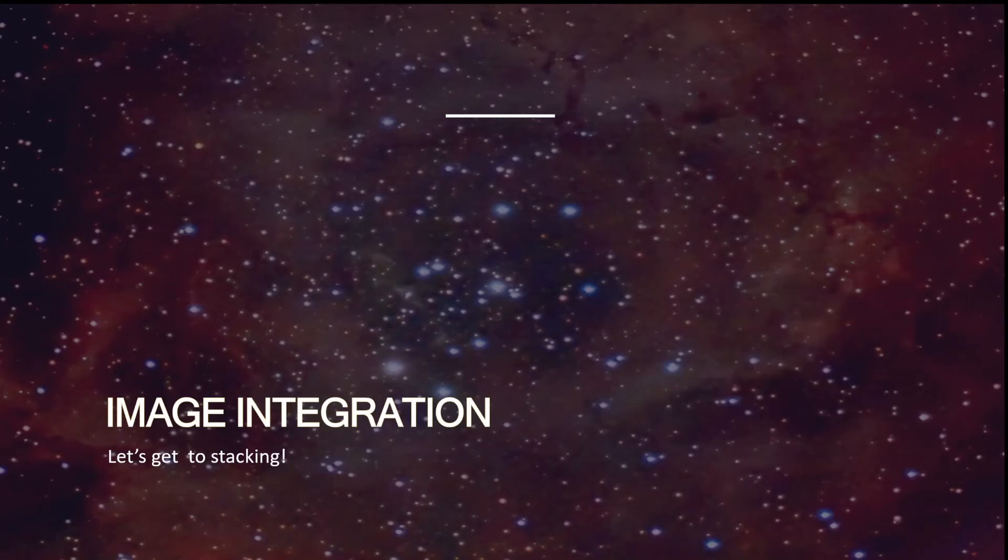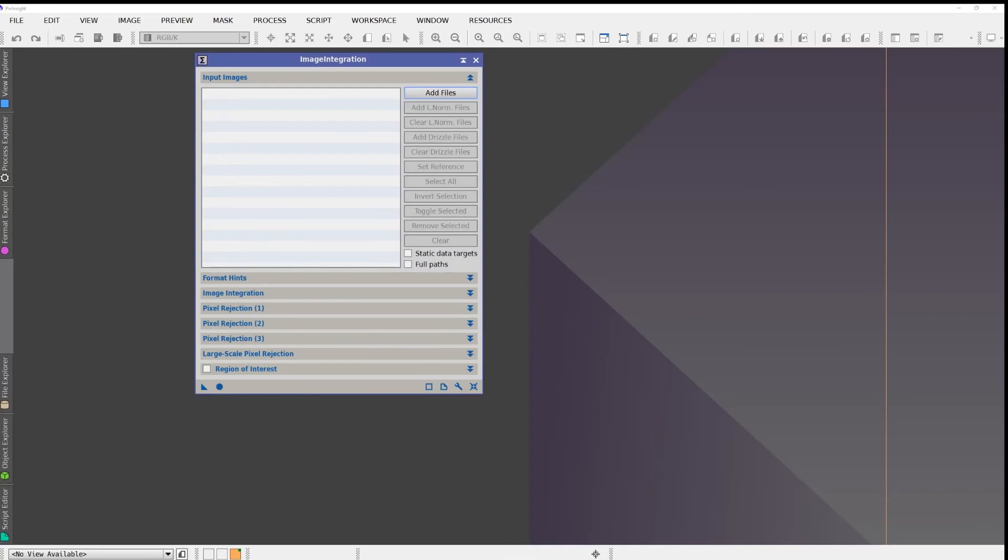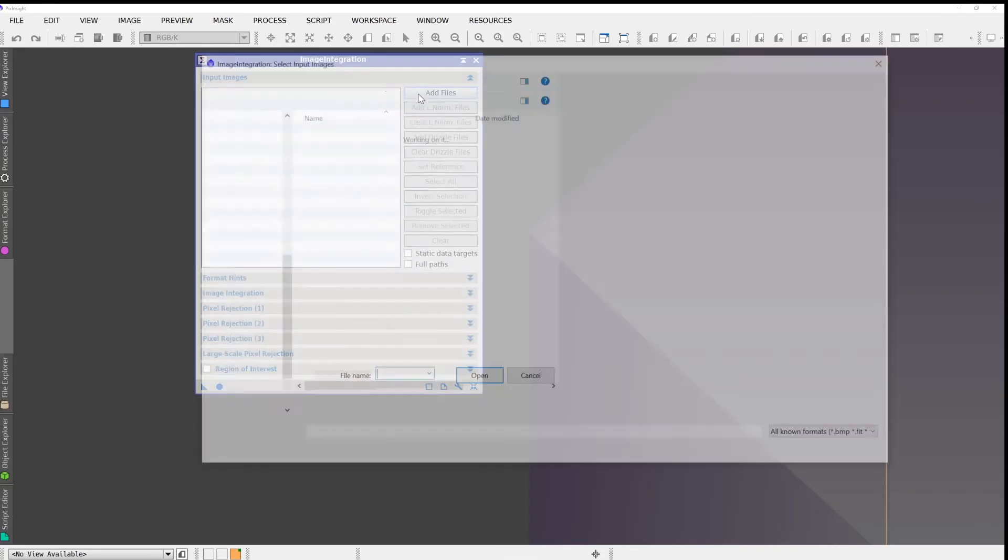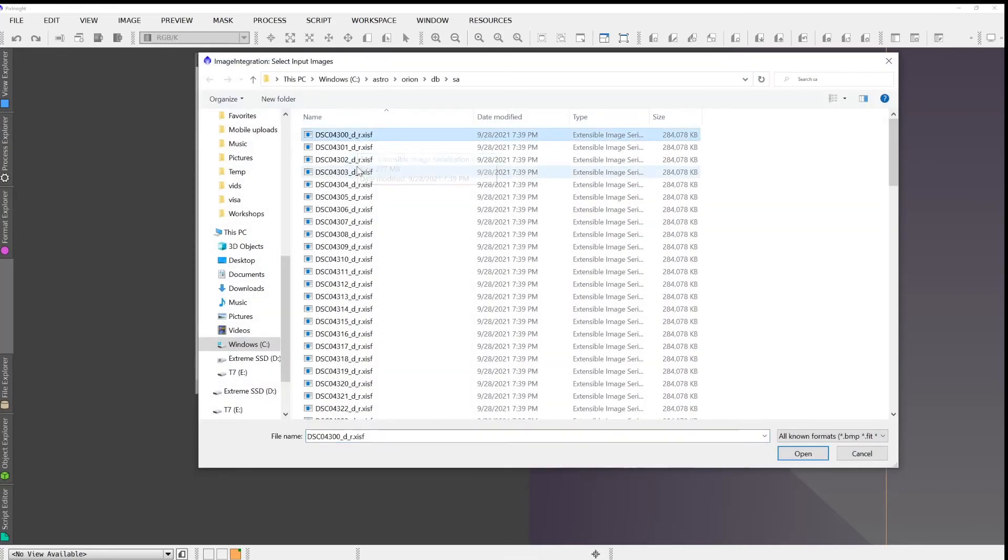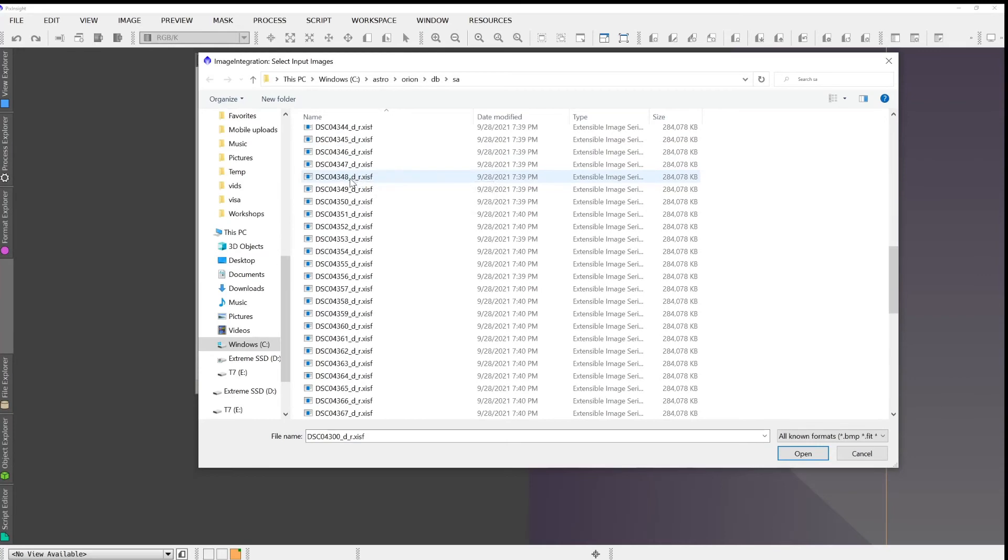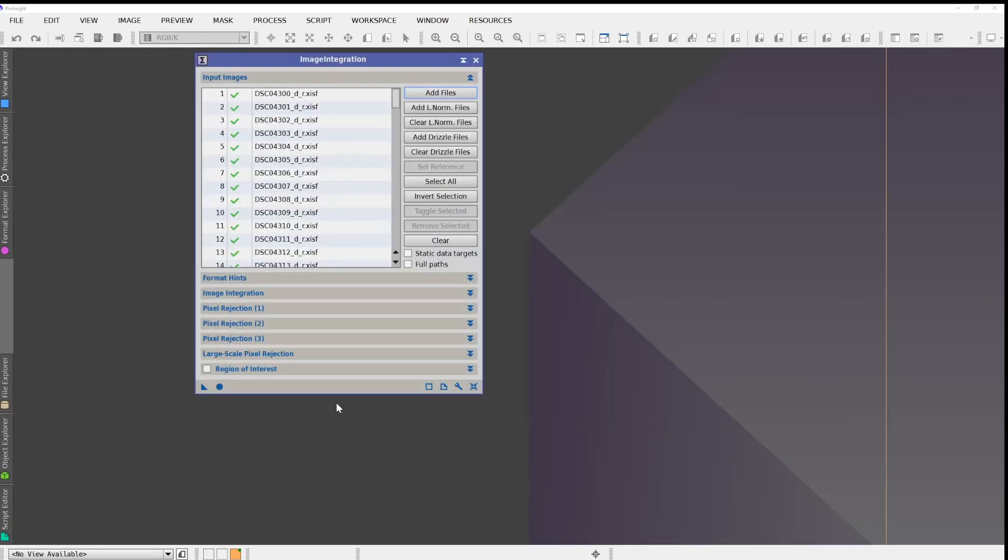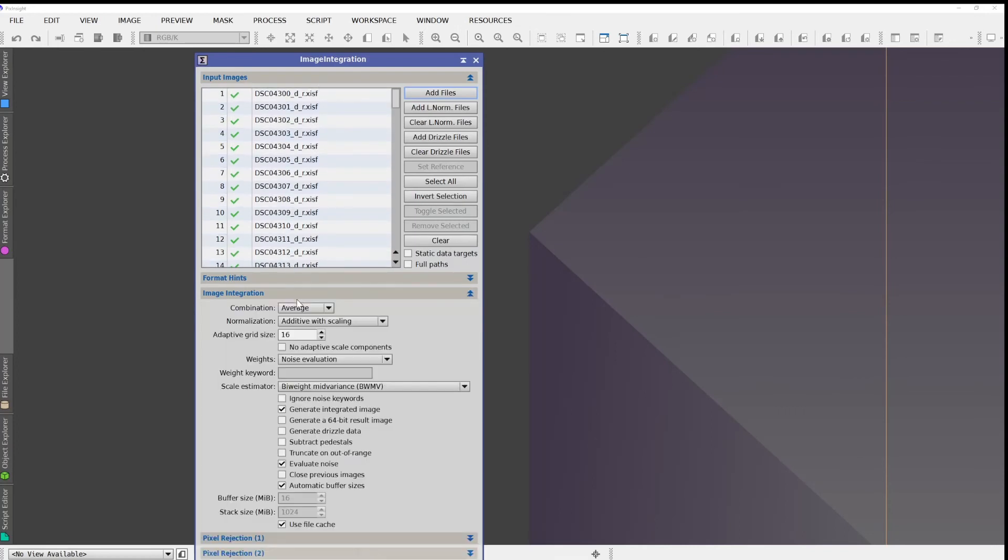We finally made it to image integration. We've prepped our images, we've aligned them, we're ready to stack them. Let's see what that looks like. I'm going to go into PixInsight, and I'm going to simply add the files that have been registered or star aligned. So I'm going to pick these. Notice I'm in the image integration dialog.